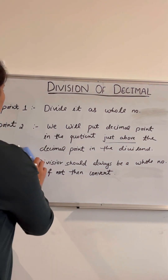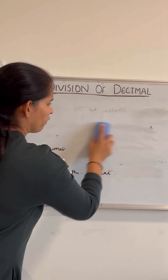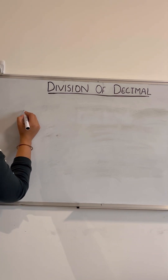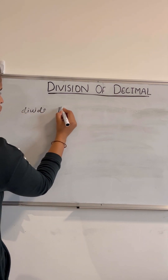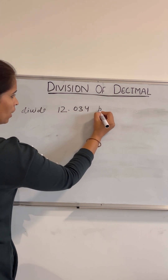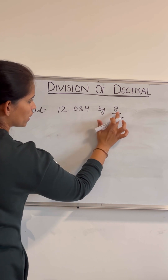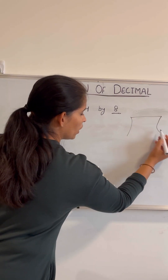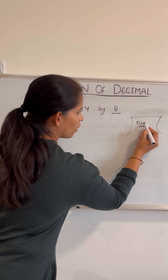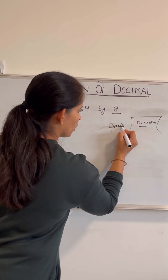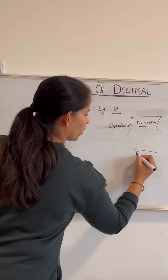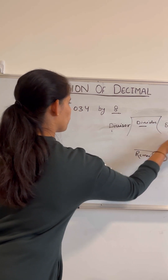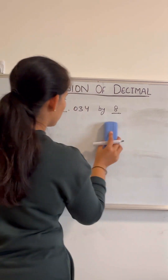The first example is dividing a decimal number by a whole number. Suppose we have: divide 12.034 by 8. Before solving, let's recall the terminology: the number being divided is called the dividend, the number we divide by is the divisor, the answer is the quotient, and what is left over is the remainder.